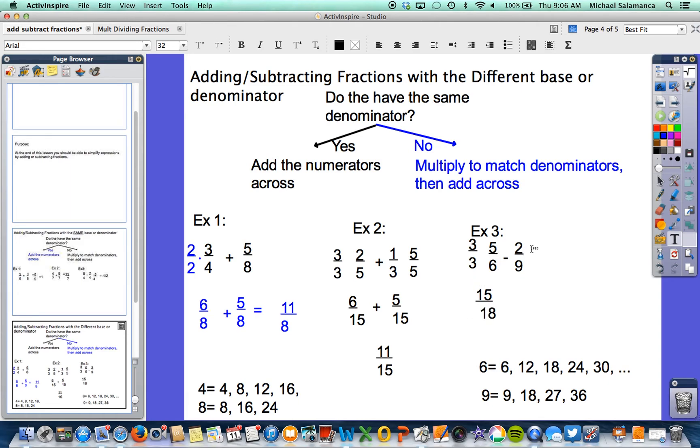And for the right side, 2 ninths, we're going to have to multiply that by 2. And again, what we do to the bottom, we do to the top. So now we're left with minus 4 eighteenths. And now it's just a basic subtraction problem. 15 minus 4 is 11 eighteenths. And that's your final answer.